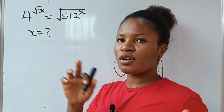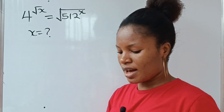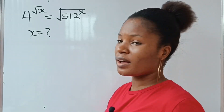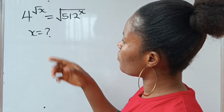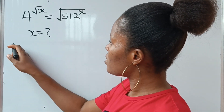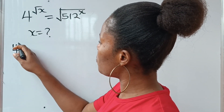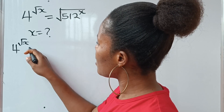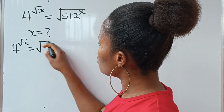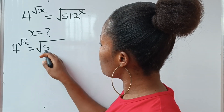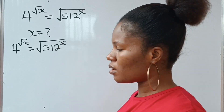Let's solve for the value of x. It's tactical, not that easy, but we can do it together. So we are asked to solve for the value of x. We have 4 to the power of root x is equal to the square root of 512 raised to the power of x.